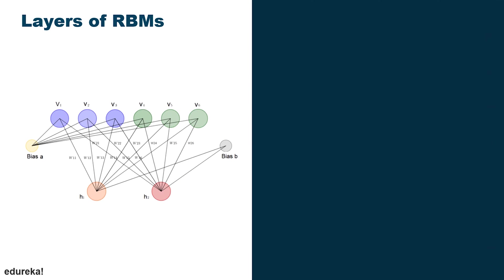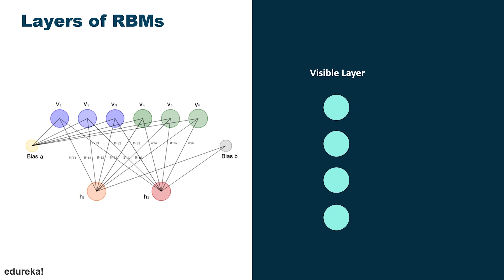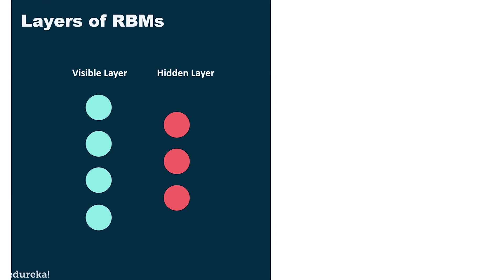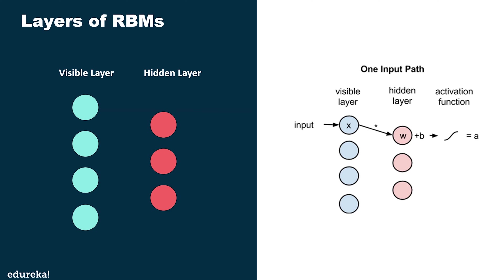Restricted Boltzmann Machines are shallow two-layer neural nets that constitute the building blocks of deep belief networks. The first layer of the RBM is called the visible or input layer, and the second is the hidden layer. Each circle represents a neuron-like unit called a node, where calculations take place. Nodes are connected across layers, but no two nodes of the same layer are linked — meaning there is no intra-layer communication. This is the restriction in a Restricted Boltzmann Machine. Each node processes input and makes stochastic decisions about whether to transmit it or not.